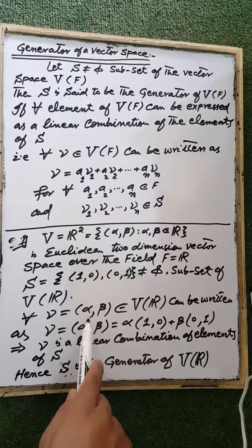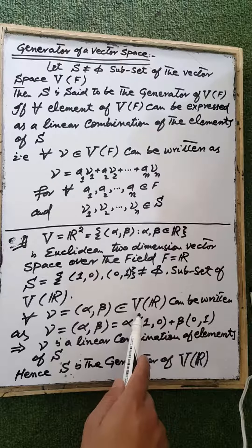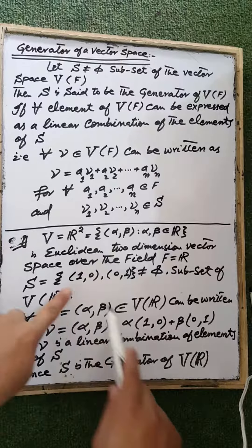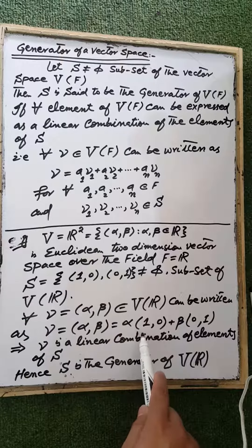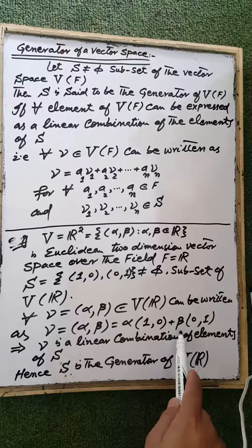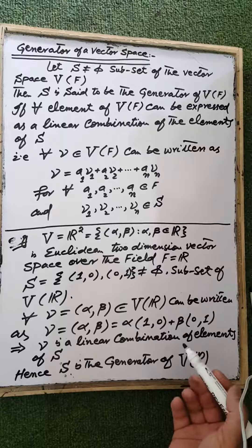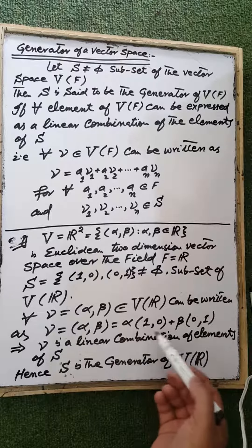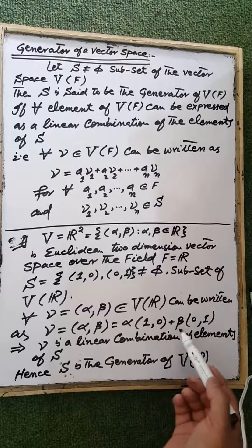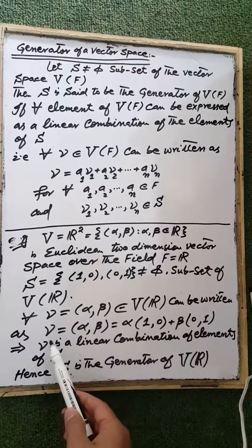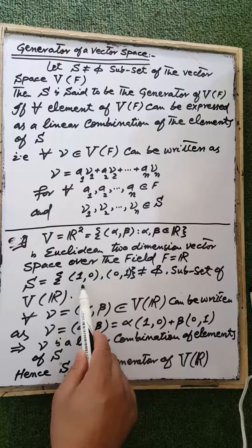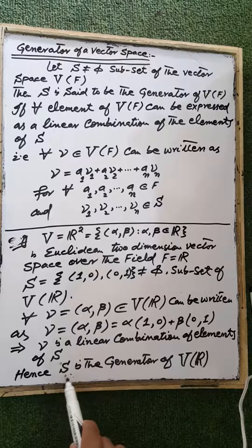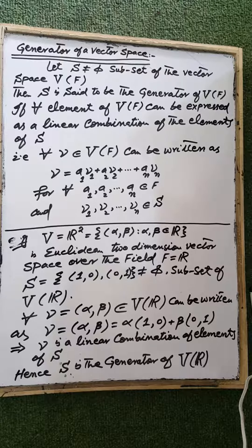Then each element of the vector space V, which is a two-dimensional vector (α, β), can be written as a linear combination of the elements of S: α multiplied by (1,0) plus β multiplied by (0,1). Here α and β are real numbers. After scalar multiplication and addition, we get the resulting vector, confirming that the vector can be expressed as a linear combination of the elements of S. Therefore, the set S is the generator of the vector space V over the field F, where F equals the set of real numbers.